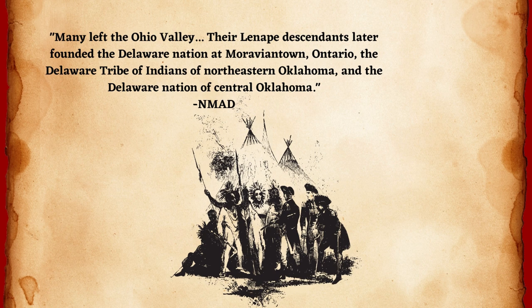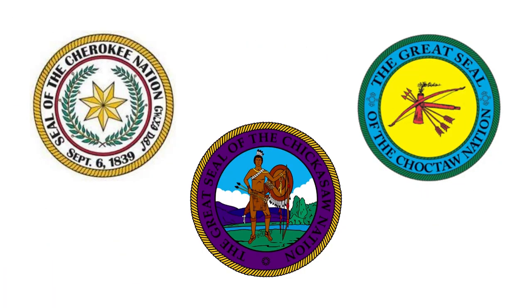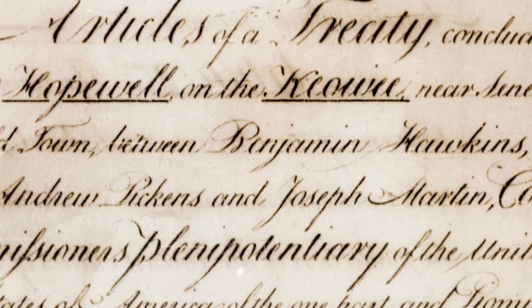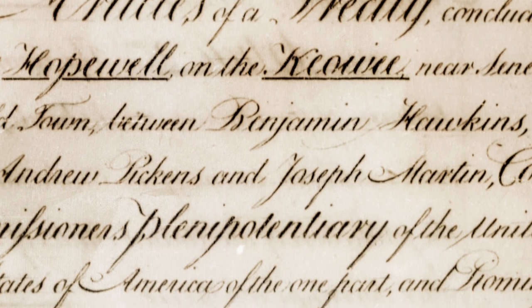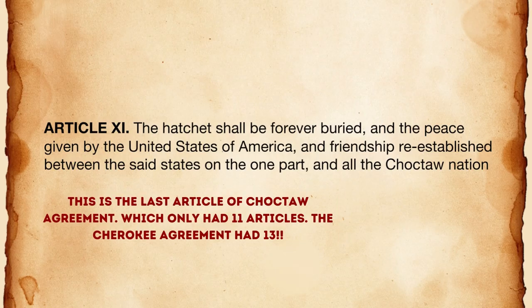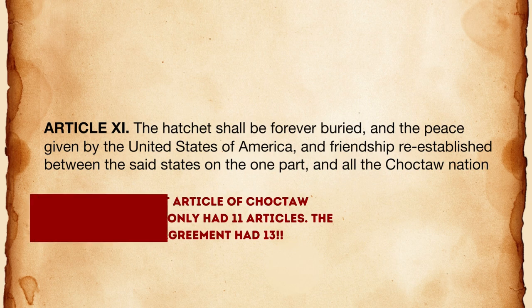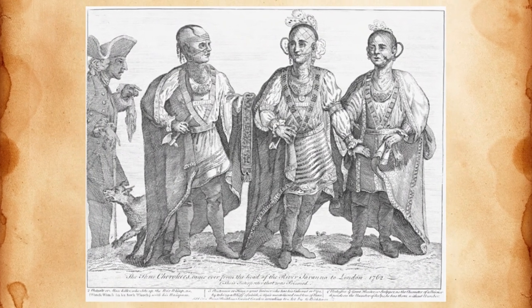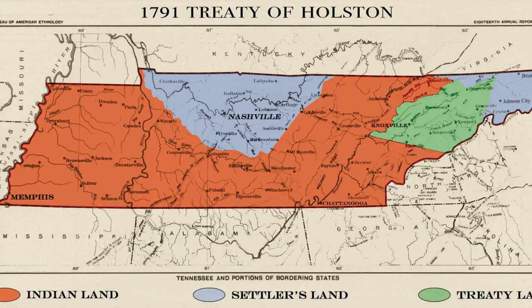Following the Revolutionary War, three treaties were signed with the Cherokee, Choctaw, and Chickasaw Nations in the mid-1780s, known as the Treaty of Hopewell. Each of these treaties extended protection to the tribes, and all three ended with the same sentence: 'The hatchet shall be forever buried, and peace given by the United States of America.' Even during the signing of the Treaty of Hopewell, settlers continued to expand into the lands of the Cherokee, and by 1791 another treaty would be signed forcing the Cherokee to forfeit even more land.